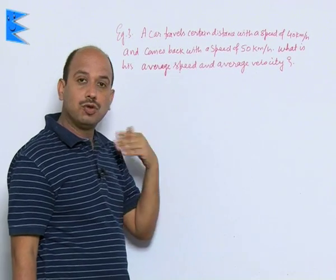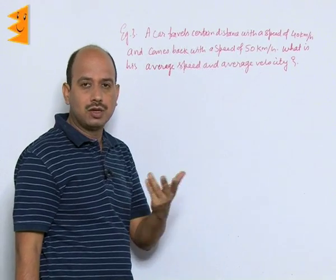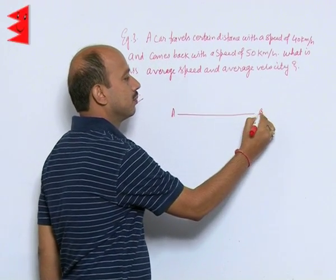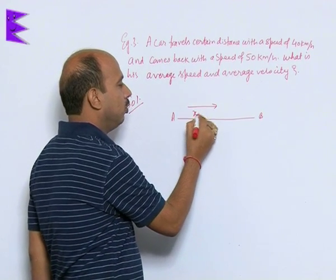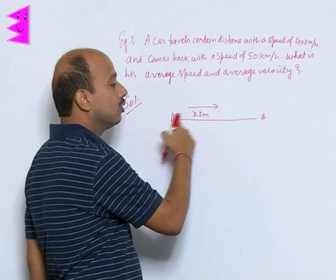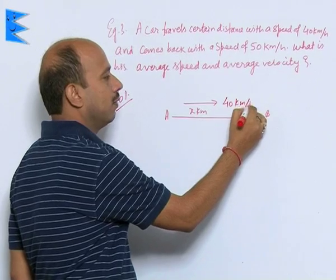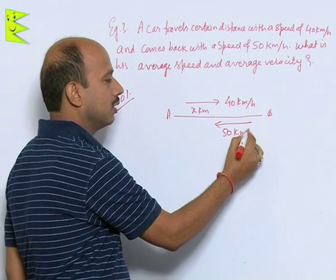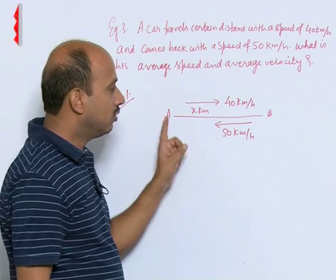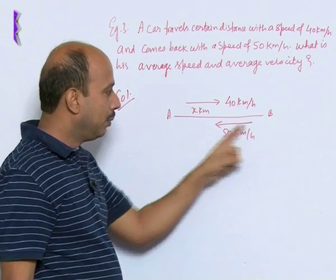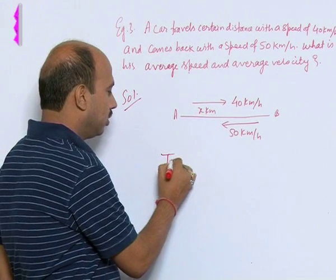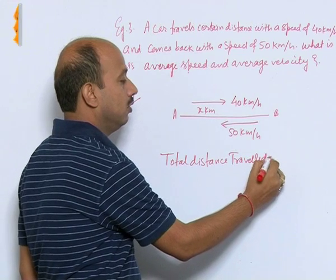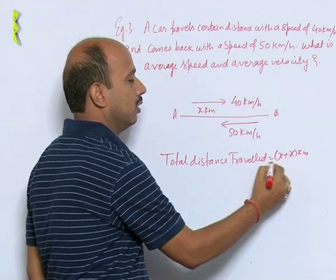We solve this by assuming the one-way distance. Suppose the car goes from A to B — let this distance be x kilometers — at 40 km/h, and comes back at 50 km/h. While going it travels distance x, and while coming back it also travels distance x. So total distance traveled equals x plus x, which is 2x kilometers.